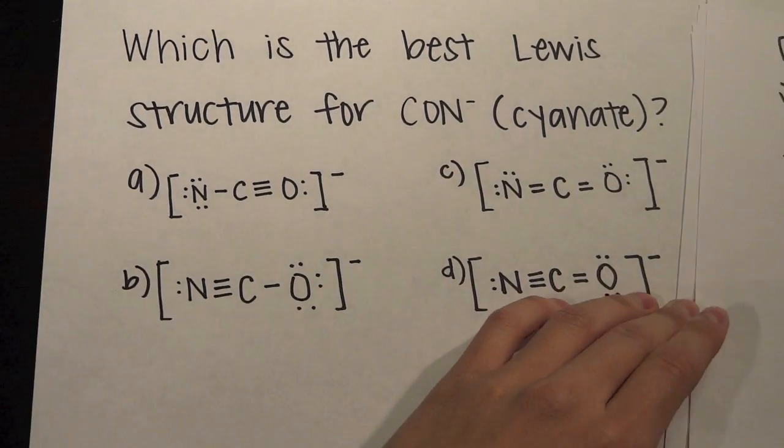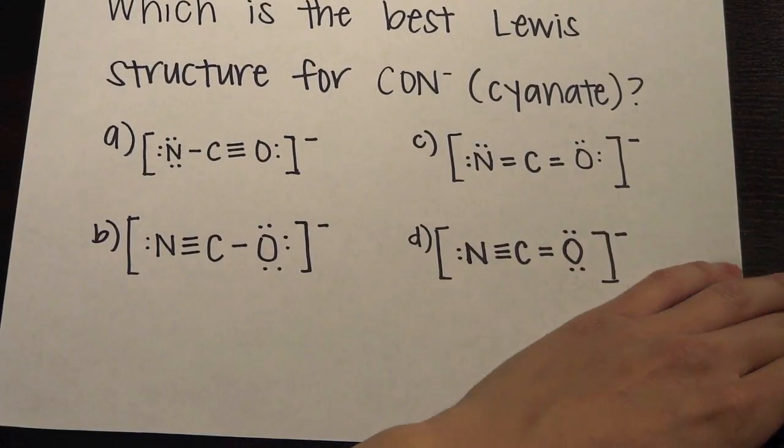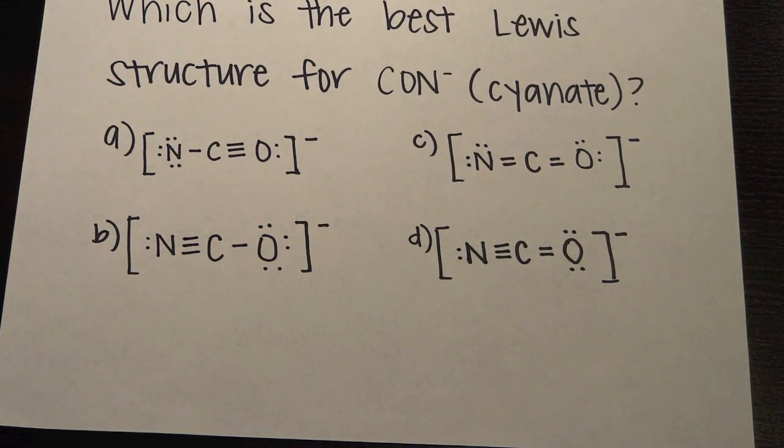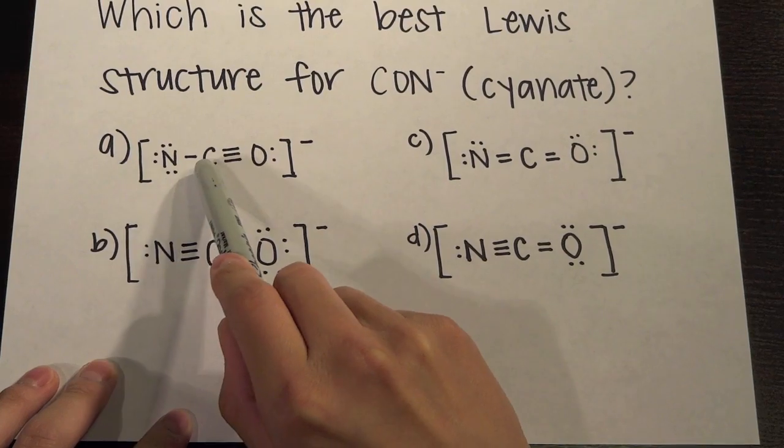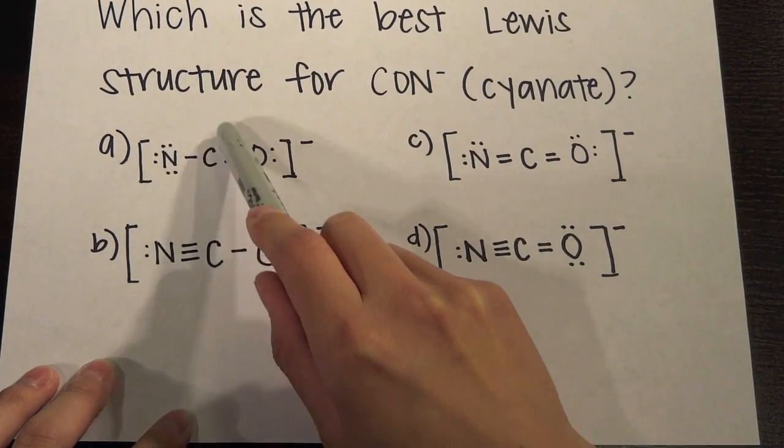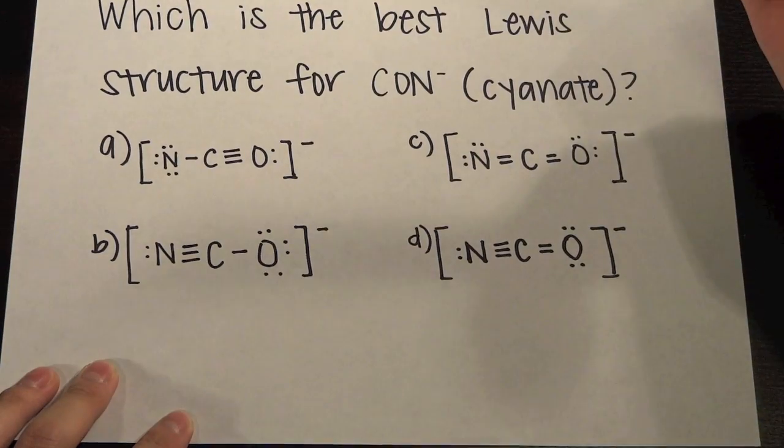So if we look back here we should see that there should be one that we can eliminate that doesn't follow the octet rule. So let's look at this one.